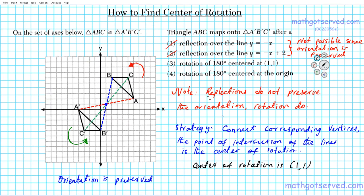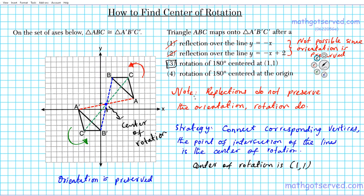Two things to keep in mind: number one, reflections do not preserve orientation; rotations do. Number two, when you connect corresponding vertices for a rotation transformation, the intersection of the segments connecting corresponding vertices gives you the center of rotation. Applying both of these principles, the center of rotation is (1,1), so the answer is definitely option three.